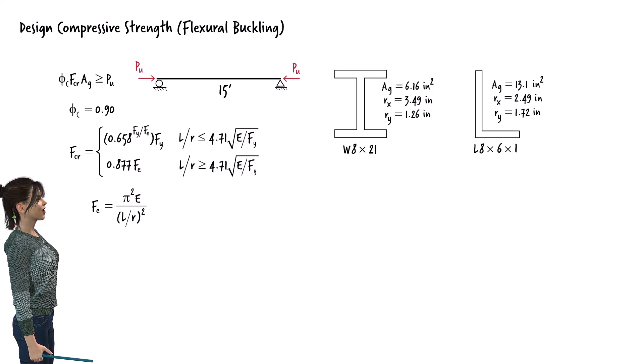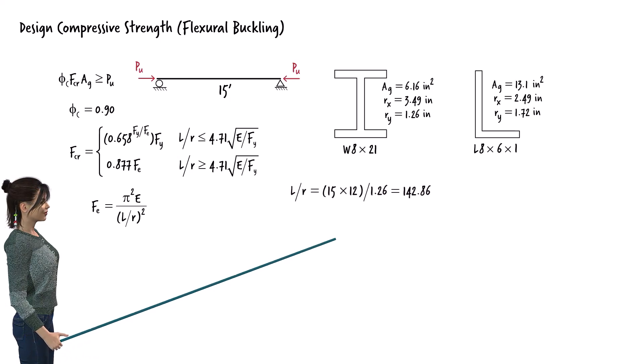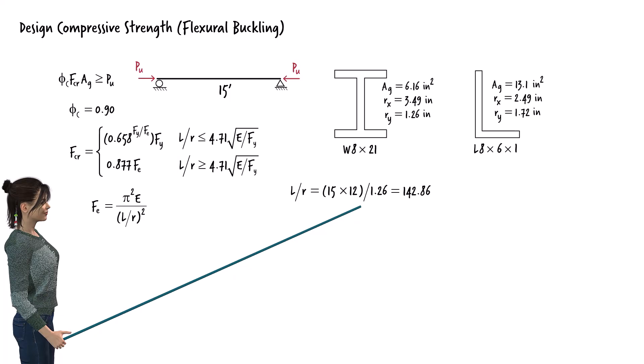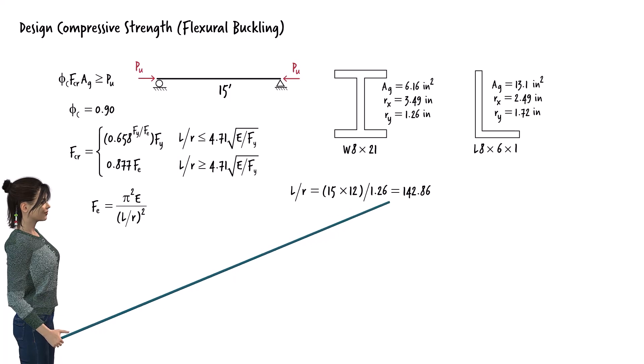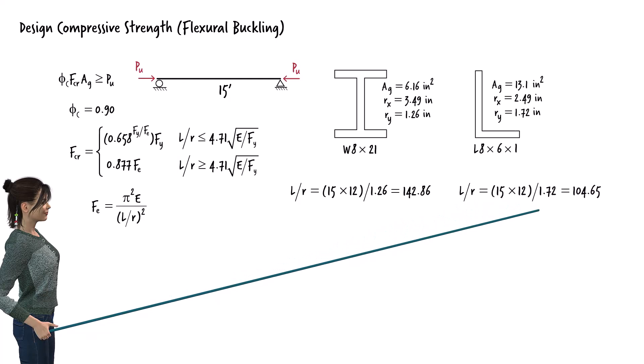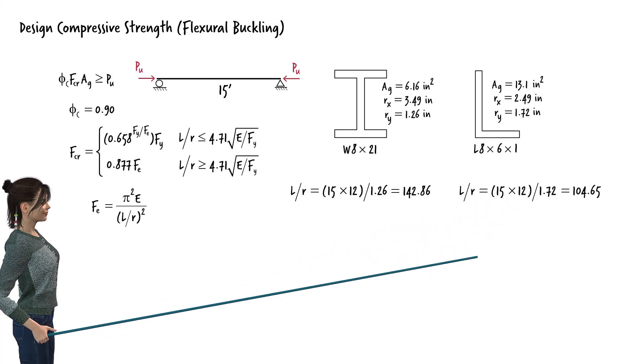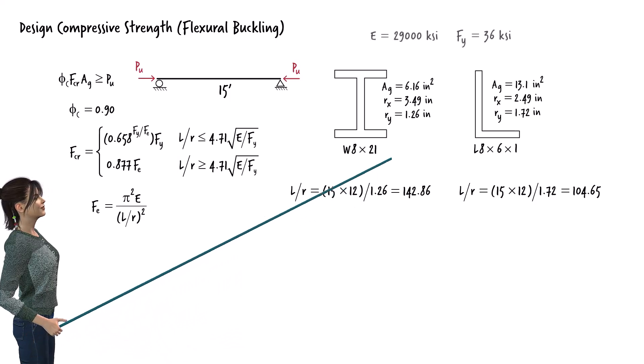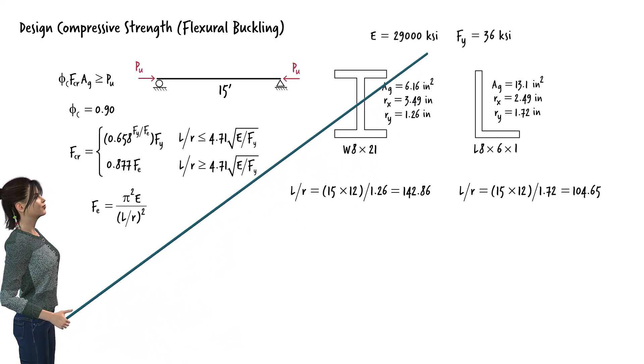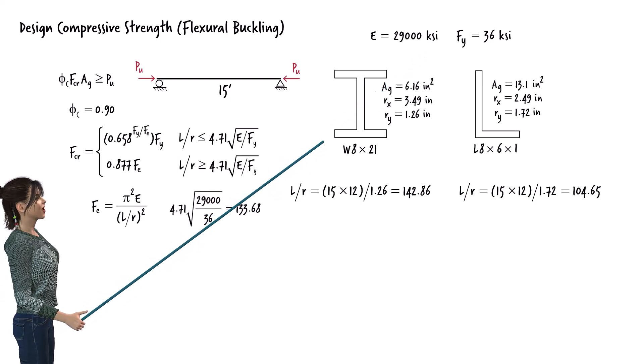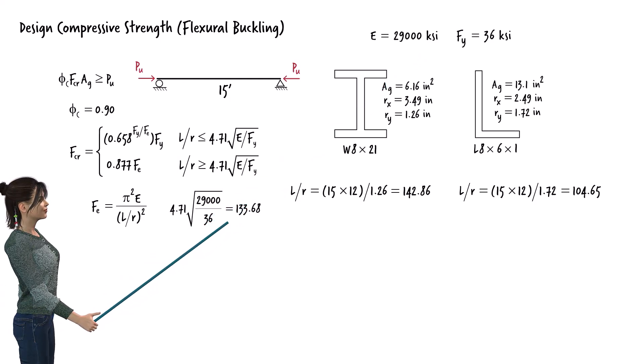For this example, we need the cross-sectional area and the radii of gyration about the x- and y-axis for each section. Using the smaller radius of gyration, we can determine the slenderness ratio for each section. For the W-shaped section, L over R equals 142.86. For the angle, L over R is 104.65. Assuming a modulus of elasticity of 29,000 ksi and F sub y of 36 ksi, the bifurcation value for L over R becomes 133.68.